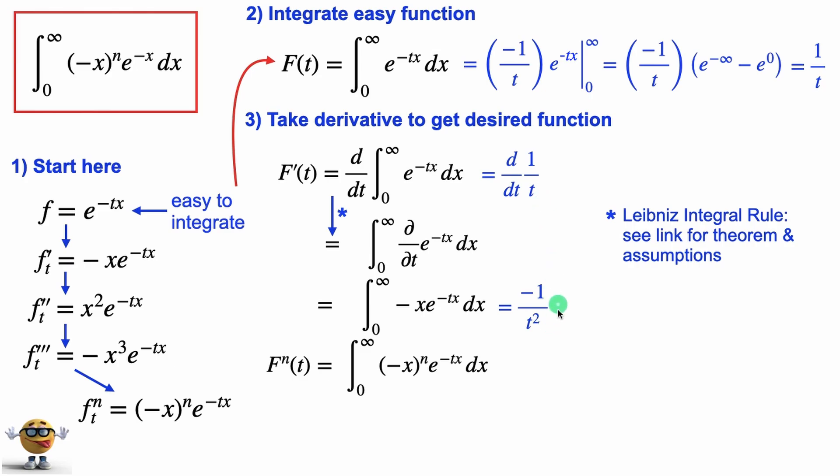See every time we take a derivative, the power or the exponent increases by 1 in the denominator. And then we start getting this factorial up top. If you were to keep doing this over and over, what we get is (-1)^n times n! over t^(n+1).